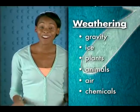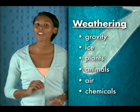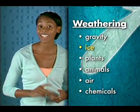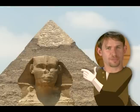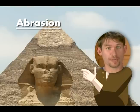Other causes of weathering are gravity, ice, plants, animals, air, and chemicals. There are lots of different ways that weathering can occur. You know the way that sand is grinding away at the Sphinx's face? Scientists call that form of weathering abrasion.